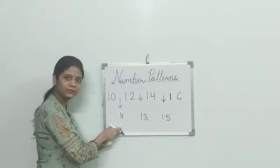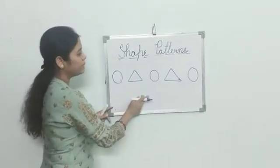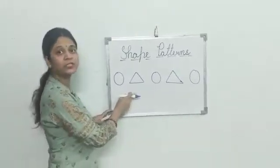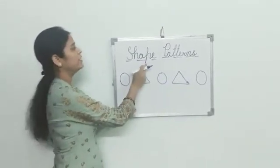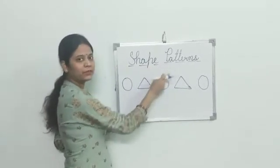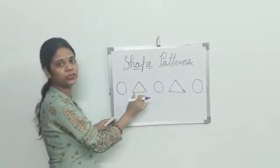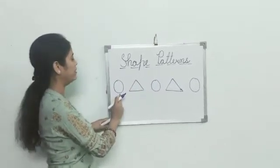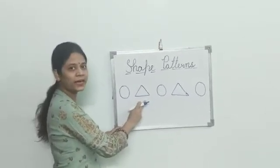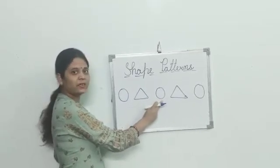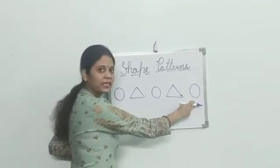Have you understood it? Yes. Now we take one more example, but this is the example of shape pattern. Like number pattern, there is also shape pattern. For example, the first shape is circle, second shape is triangle, then again circle, then again triangle, then again circle.